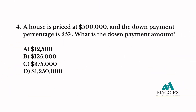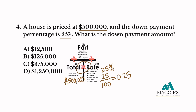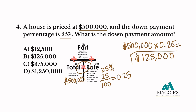Number four. A house is priced at $500,000 and the down payment percentage is 25%. What is the down payment amount? The house has a sales price of $500,000 — that goes in our total column — and a down payment percentage of 25%, which goes in our rate column. Convert your percent to a decimal by dividing by 100: that equals 0.25. Now all we have to do is multiply: $500,000 times 0.25 equals $125,000, which is the down payment required for this purchase. So the answer is B.